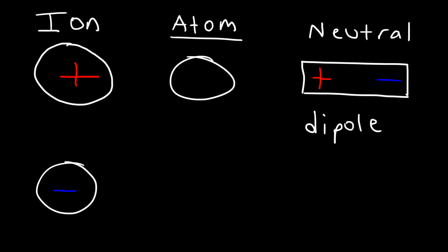When you think of 'di,' di means two — there are two regions of charge. The left side is positive, the right side is negative. This is the case of a polar atom, or even a polar molecule, which contains different regions of charge.